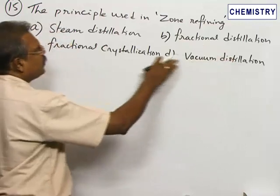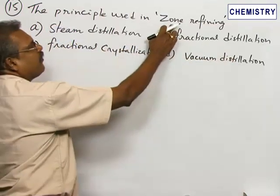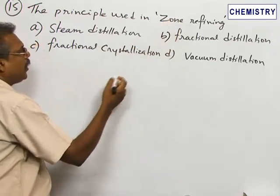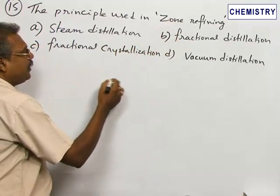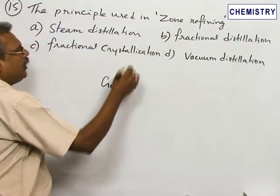So of the four options, fractional crystallization suits zone refining because zone refining is used to prepare ultra high pure zirconium and semiconductor materials like germanium and silicon. Here, the zone refining is done using heating with a circular coil.